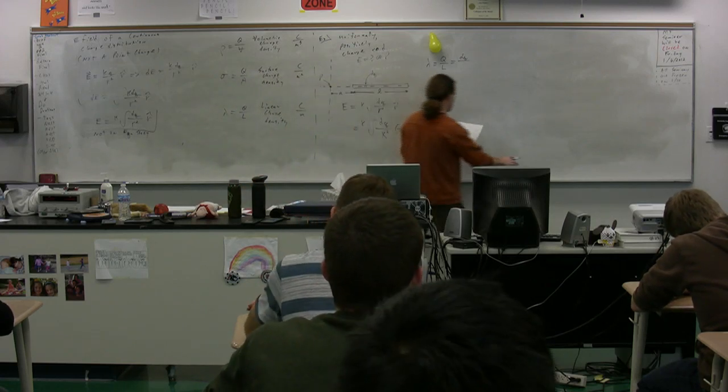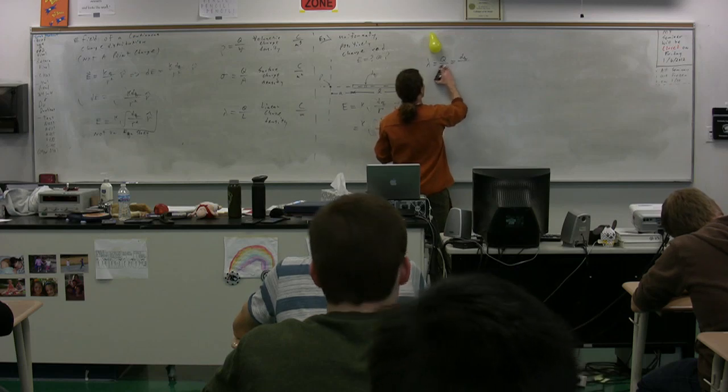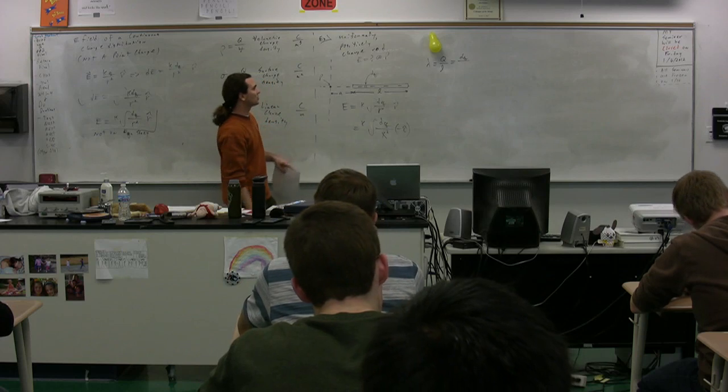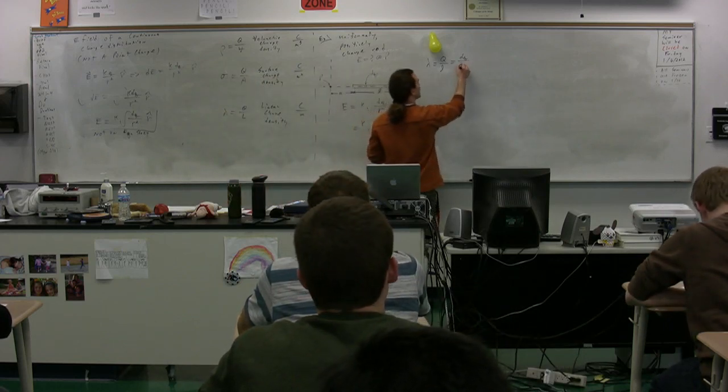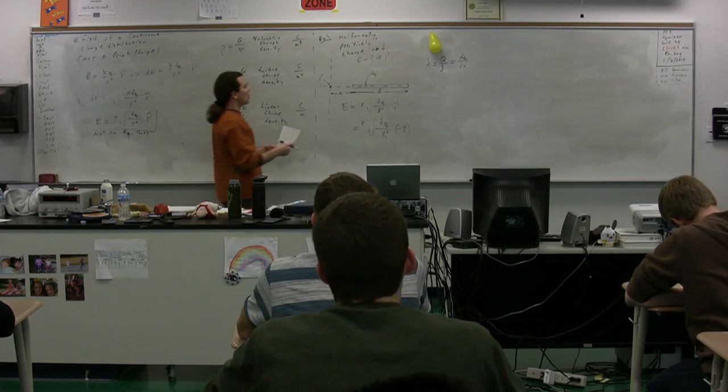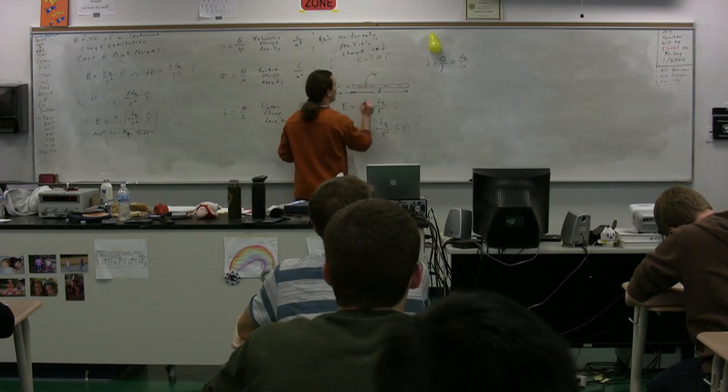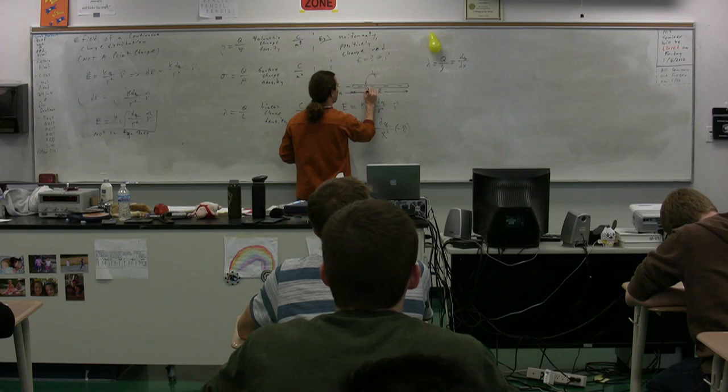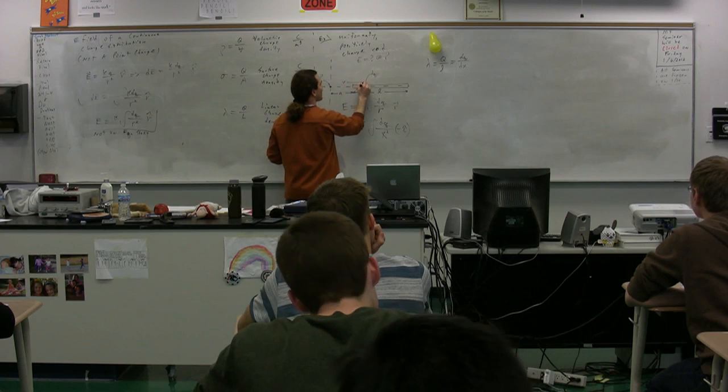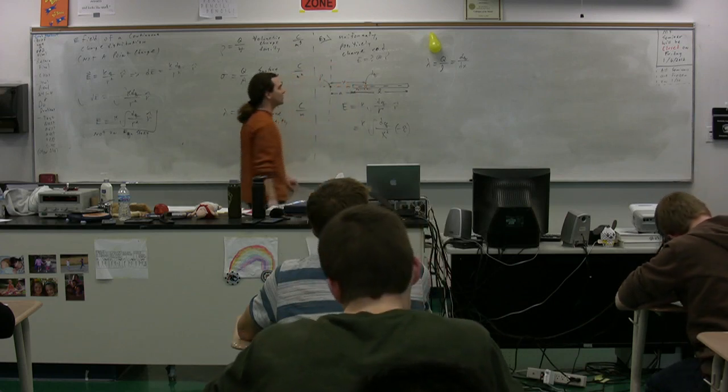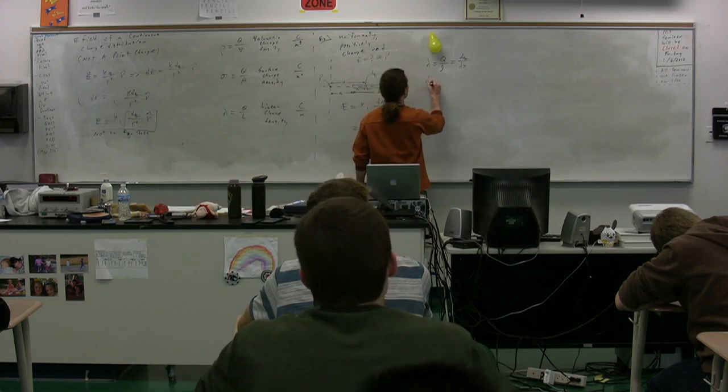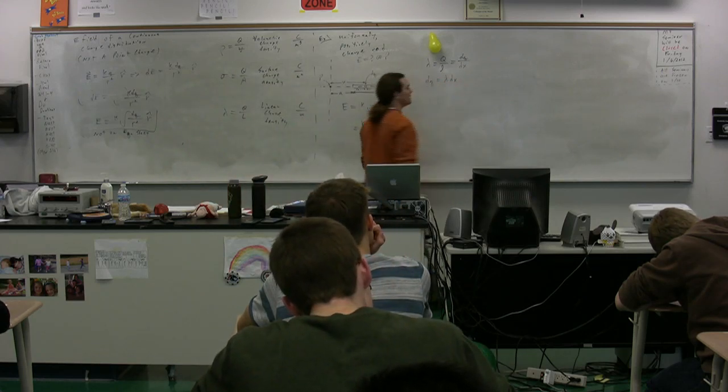L would be the length. And I should probably be... I should use the same symbol. I apologize. I used L, so I should use the same one there. Rather than L, it's going to be dx, because that's the direction that we're talking about. So dx. So notice, this dq has a width of dx. And it's located a distance x from point P. So then we can rearrange it, and we can say dq is equal to lambda times dx.